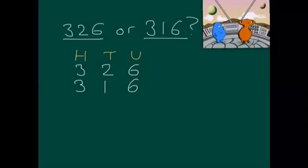Now, when we compare numbers, we must always start on the left. So, we look at the largest place value. So, in this column, both numbers have got three hundreds. Now, because they're equal, we need to look at the next column, in this case, the tens.